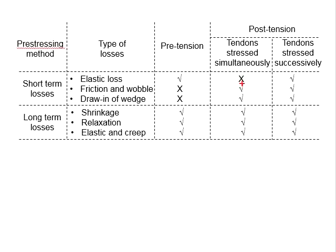For the post-tensioning member, a duct must be provided so that the steel tendon can be inserted and jacking can be performed. There will be direct contact between the ducting and the steel tendon, and this gives rise to frictional and wobble losses.